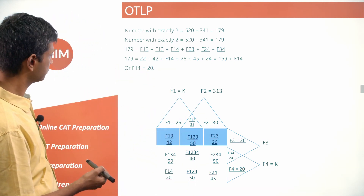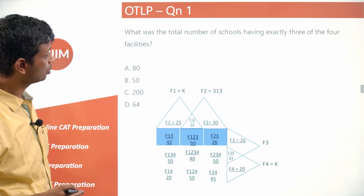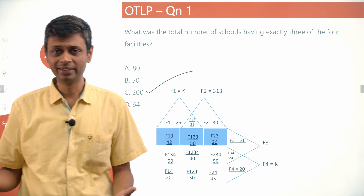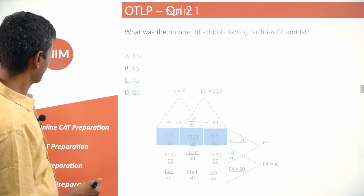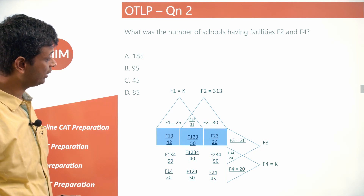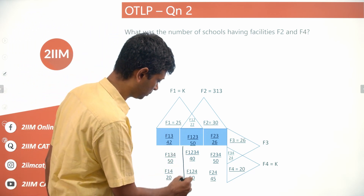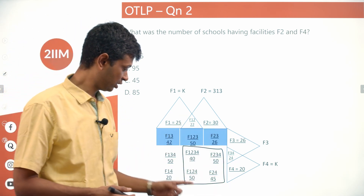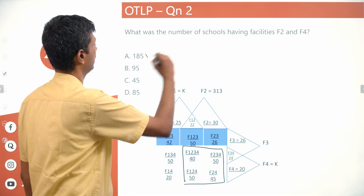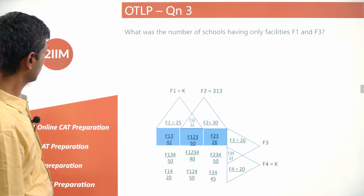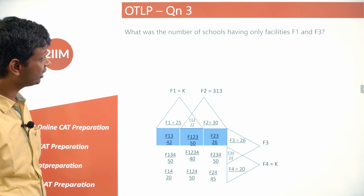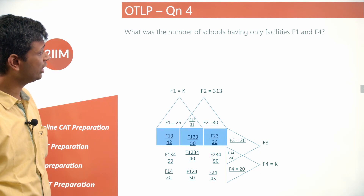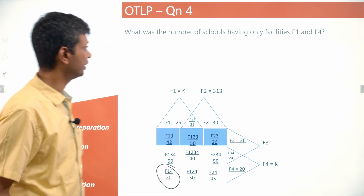Now we answer the questions. Total schools with exactly three of the four facilities: 50×4 = 200. Number of schools having facilities F2 and F4 (the full intersection, not only): 50 + 50 + 40 + 45 = 185. Number of schools having only F1 and F3: 42. Number of schools having only F1 and F4: 20.